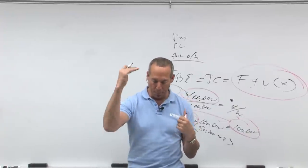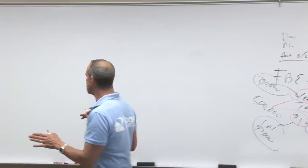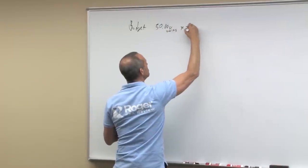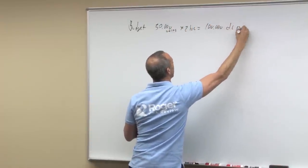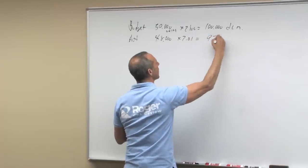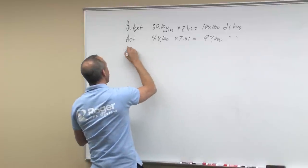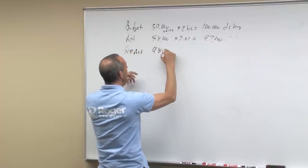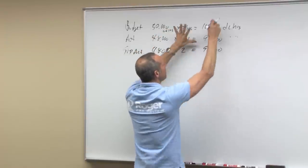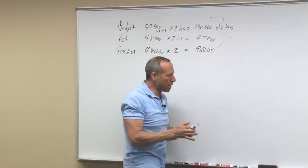Before we go on, look at the box again about budget, actual, and standard allowed. Let me set those up one more time. We had a budget of 50,000 units at two hours a unit is 100,000 direct labor hours. We had actual of 48,000 at 2.01, which was 97,000 direct labor hours. Our standard allowed for actual is 48,000 actual times standard allowed budget two is 96,000. We're going to be using all of these in our variance analysis. I just want you to understand the basics of where they came from.